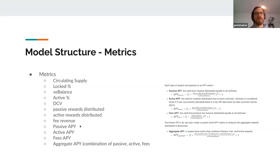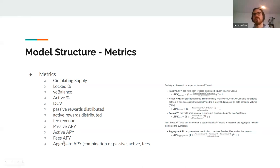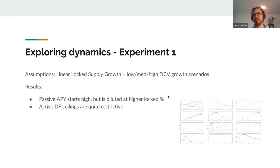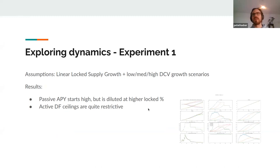The APYs ended up being key metrics representing the aggregate incentive for locking Ocean. My assumption was that users will lock Ocean as long as the APYs reward them enough. The passive APY is the main incentive for locking Ocean; the active APY is the main incentive for voting with vote escrow tokens. I also calculated an aggregate APY combining both.